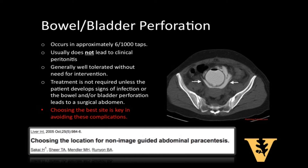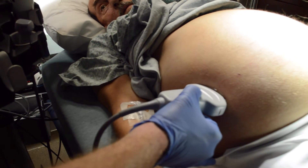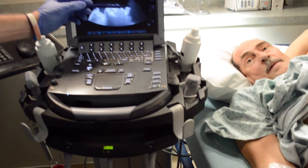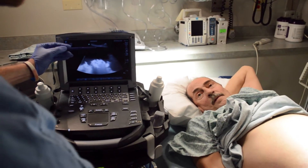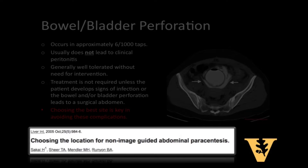Bowel and/or bladder perforation during paracentesis occurs in approximately six in every one thousand taps. Fortunately, it usually does not lead to clinical peritonitis and is generally well tolerated without need for surgical intervention. Treatment is not required unless the patient develops signs of infection or unless the perforation leads to a surgical abdomen. Choosing the best site is key in avoiding these complications. A prospective study found that the abdominal wall was thinner in the left lower quadrant and the pool of fluid was deeper there compared to the right lower quadrant.